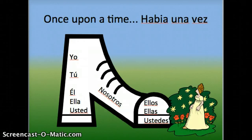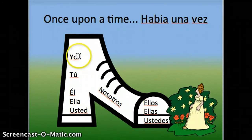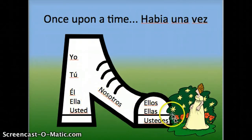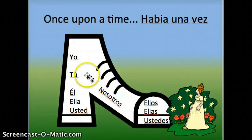Once upon a time, there was an old lady who lived in a shoe. When she had so many children she didn't know what to do. There were nine of them living in a shoe together: there was yo, tú, the set of triplets el, ella, and usted, nosotros, and the other set of triplets called ellos, ellas, and ustedes — all living together cramped in this shoe.